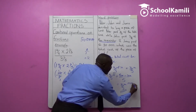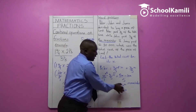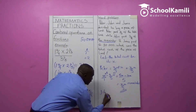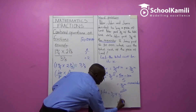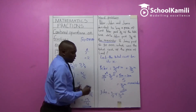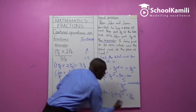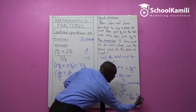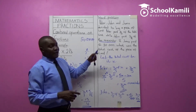John paid three-eighths of the remainder, and the remainder is 2 over 5 X. So we multiply: 3 over 8 of 2 over 5 X. That's 3 × 2 = 6 over 8 × 5 = 40. We can simplify: 2 goes into 6 three times and into 40 twenty times. This means John paid 3 over 20 X.